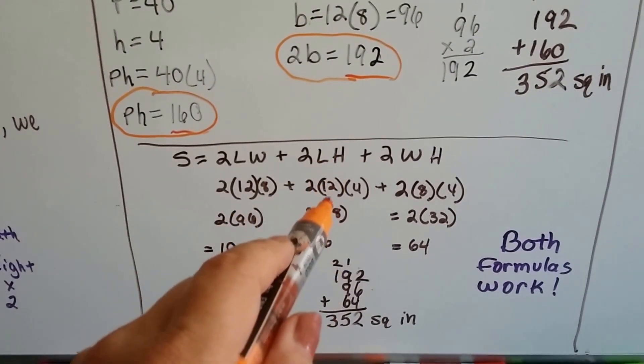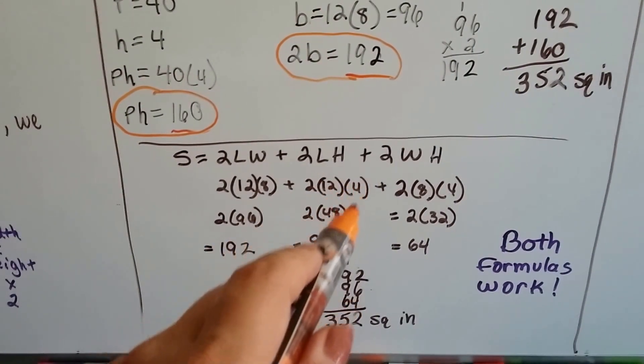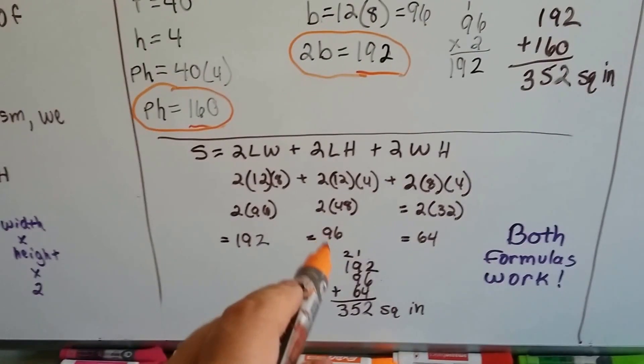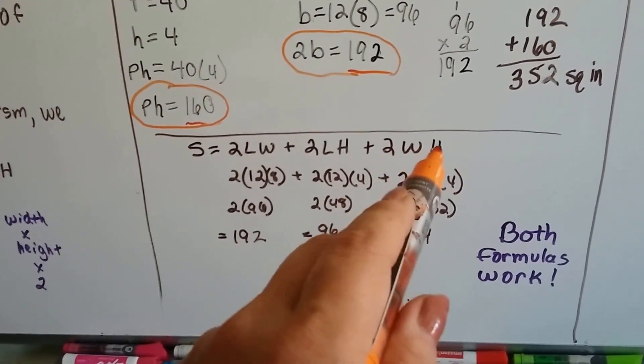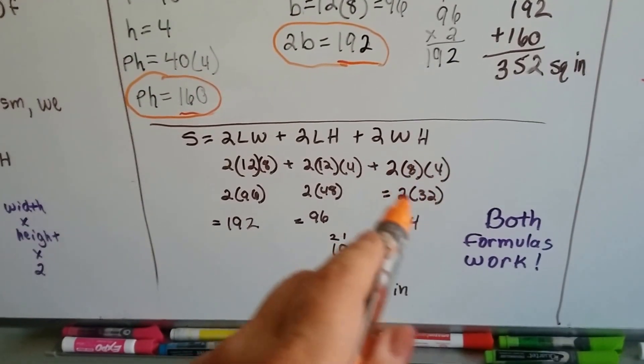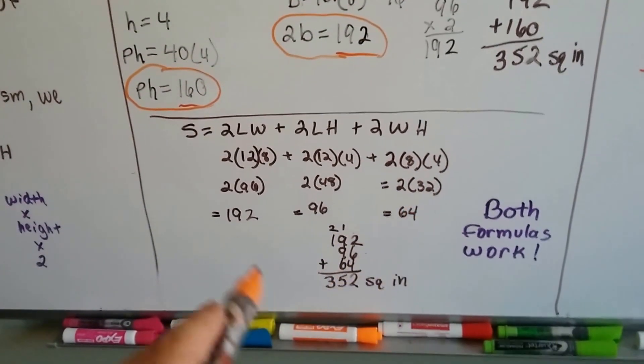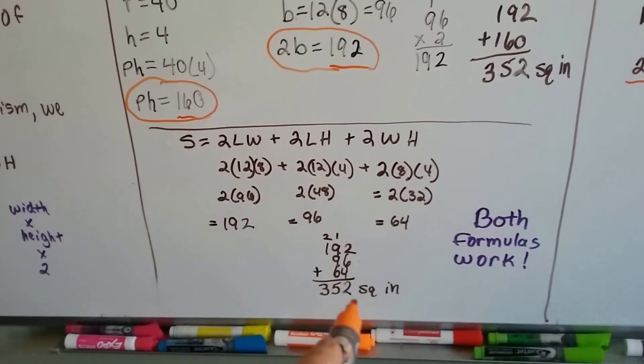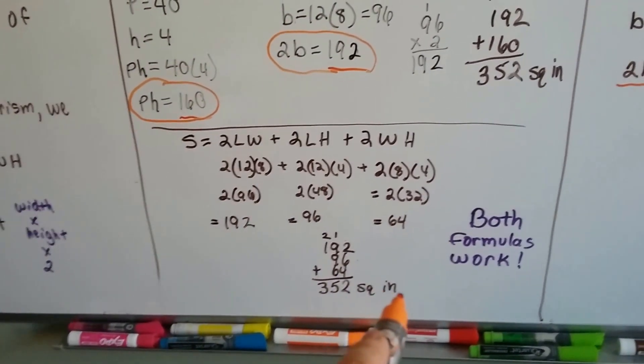2 times the length times the height. The length was 12, and the height was 4, so that's 48 times 2 is 96. Then, 2 times the width times the height. The width was 8, and the height was 4, so that's 32. 2 times 32 is 64. We add up the 192, the 96, and the 64, and we get 352 square inches.